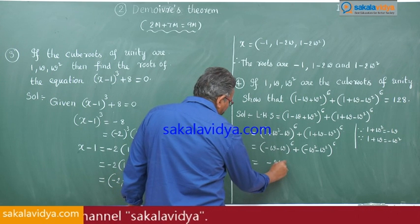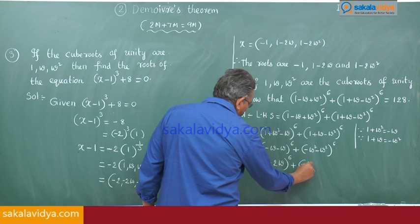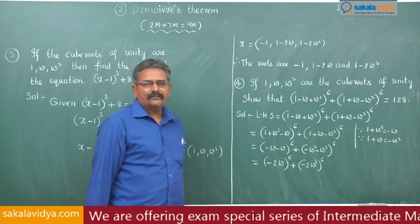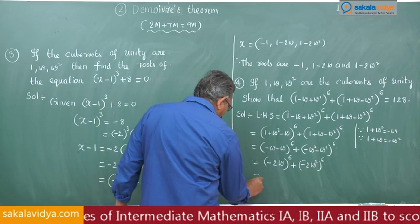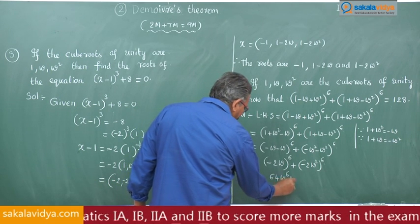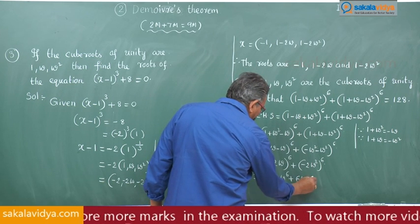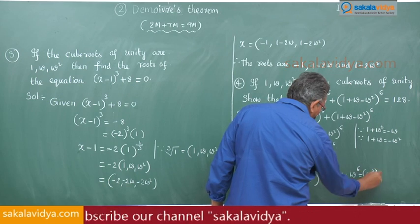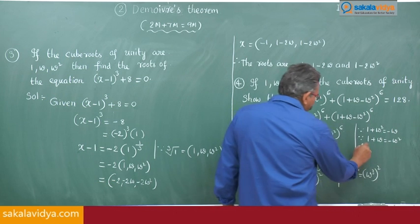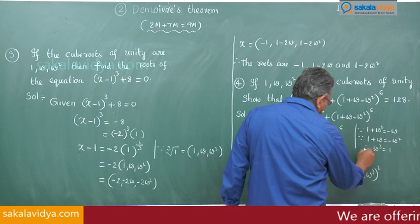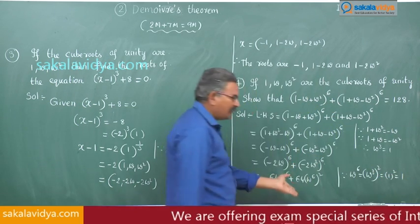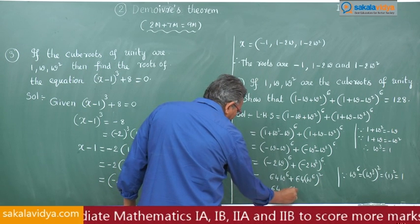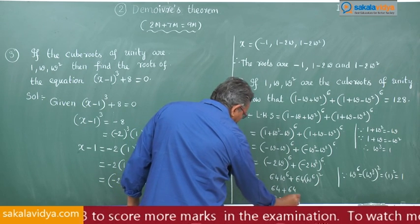This simplifies to (-2·omega)⁶ + (-2·omega squared)⁶, which equals 64·omega⁶ + 64·(omega squared)⁶. Now, omega⁶ = (omega³)² = 1² = 1, and (omega²)⁶ = (omega³)⁴ = 1. So the expression becomes 64 times 1 plus 64 times 1, which equals 128. This equals the right-hand side.